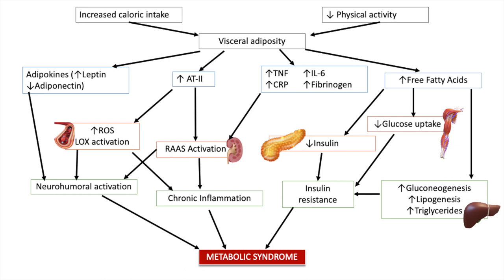So let's talk about how someone gets metabolic syndrome. Firstly, there has to be an increased caloric intake accompanied by decreased physical activity. This increases visceral adiposity, and then things start to change. Adipokines are modified — leptin is increased and adiponectin is decreased. Angiotensin 2, TNF, IL-6, CRP, fibrinogen, and free fatty acids all increase. These changes lead to neurohumoral activation, while the increase in angiotensin 2 leads to increased reactive oxygen species, lipoxygenase activation, and renin-angiotensin-aldosterone system activation. The pro-inflammatory markers are also leading to RAS activation.